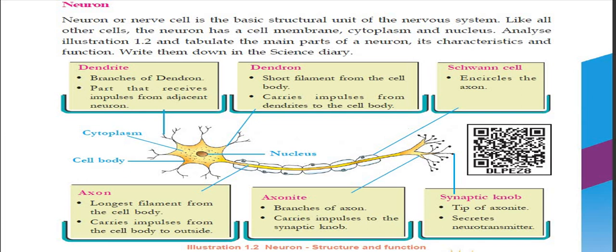Each neuron is the basic structural unit of the nervous system. The parts of a neuron include: dendrite, dendron, axon, axonite, and synaptic knob. I am going to talk about each part.